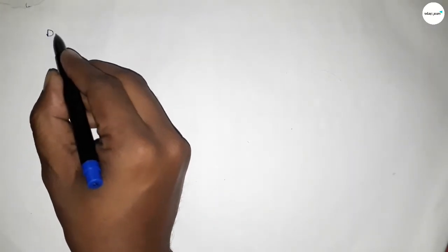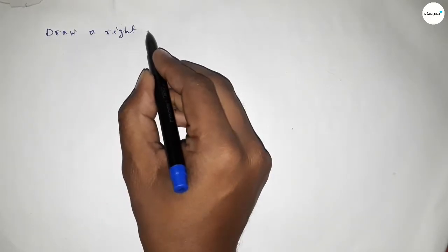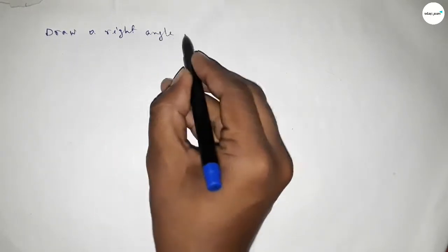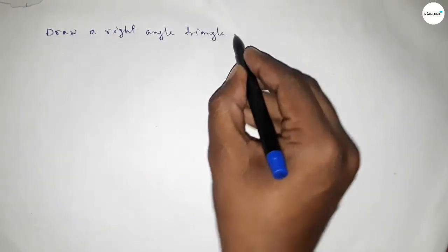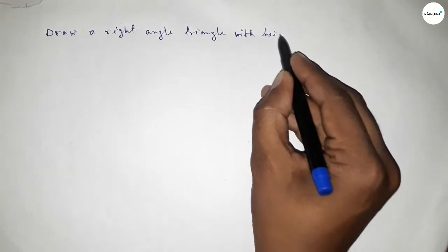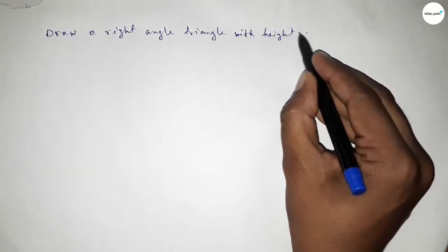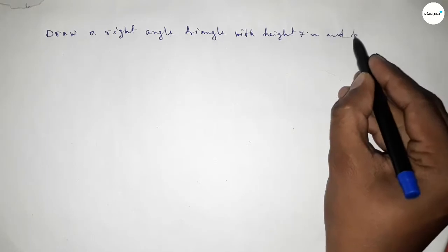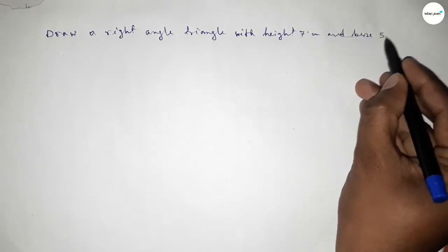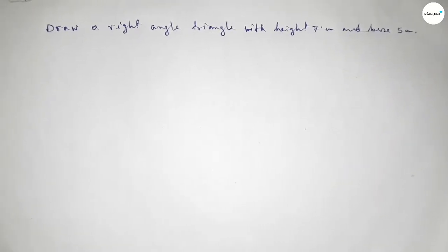Hi everyone, welcome to Size Share Classes. Today in this video we have to draw a right angle triangle with height equal to 7 centimeter and base equal to 5 centimeter. So let's start constructing a right angle triangle.